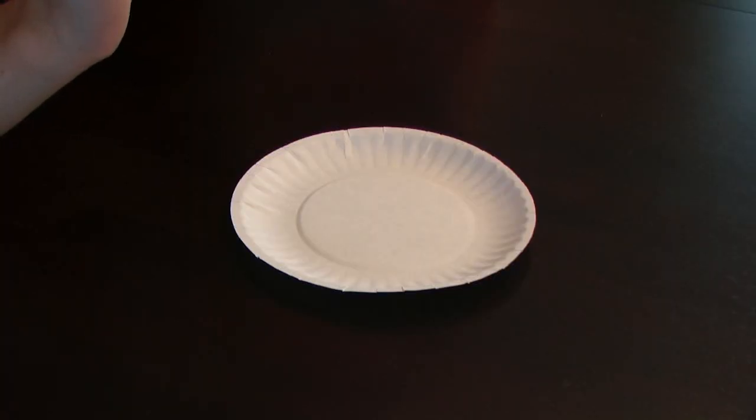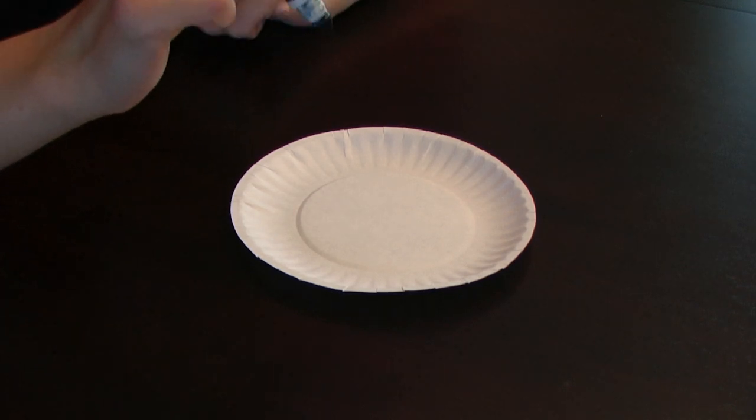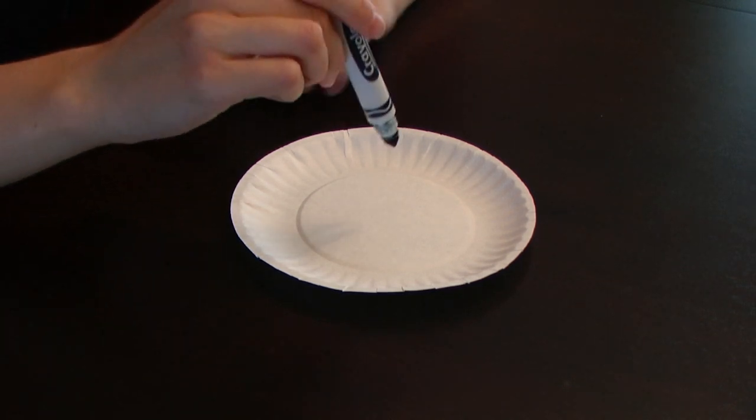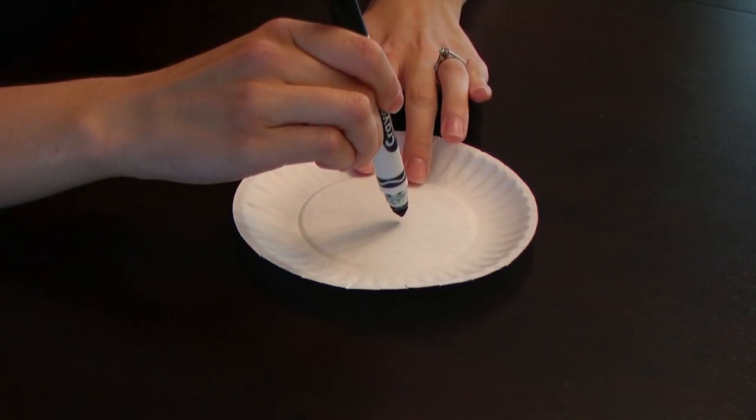The first step is to gather either a paper plate, card stock, anything that's thick to make a wind spinner. After you've gathered it, you're going to start by making a spiral.